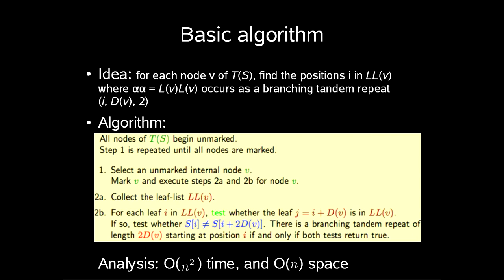Step 2b: for each leaf i in LL(v), test whether the leaf j equal to i plus D(v) is in LL(v). If so, test whether S[i] is different from S[i + 2×D(v)]. We know now that we have a branching tandem repeat of length 2D(v) starting at position i if and only if both tests return true.